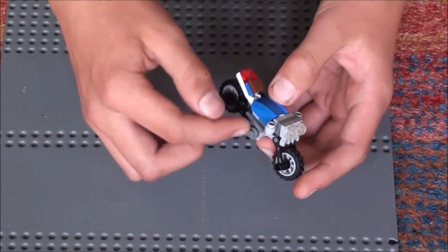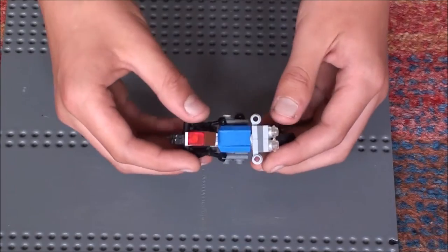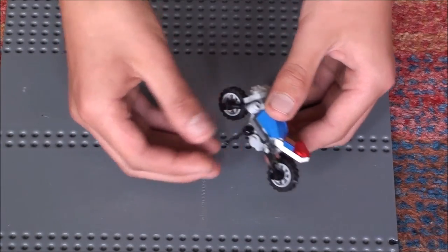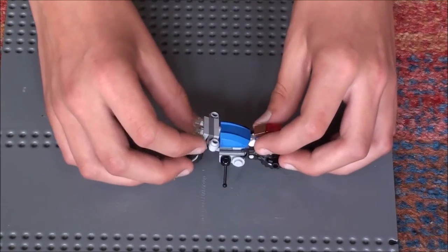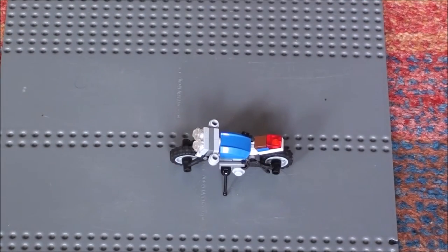And, if when you're putting it back on, they move out, just push it back. And, they're going to stay there. Then, for the stand, you just fold it out a bit more. And, push it down like that. And, that is a finished Ducati monster.